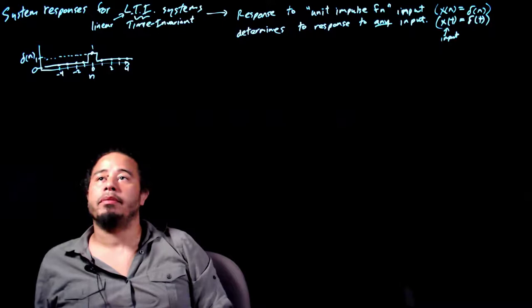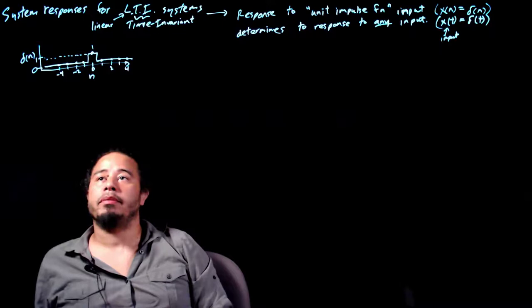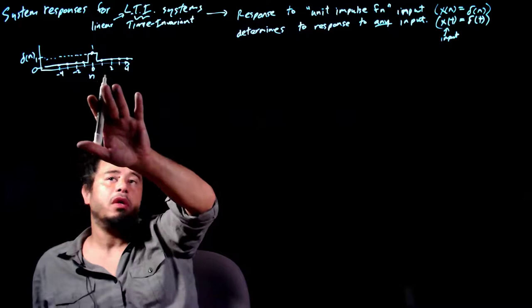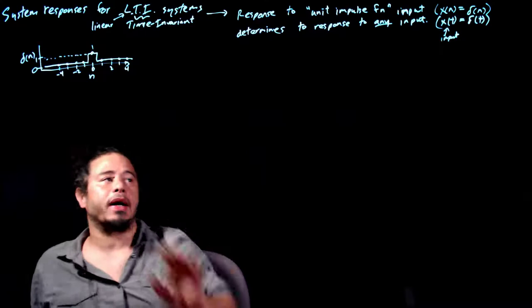There's a continuous analog, but we're not going to talk about that right now. We'll just give examples in discrete time, and then come back around to how this translates into continuous time, just for the ease of explanation.